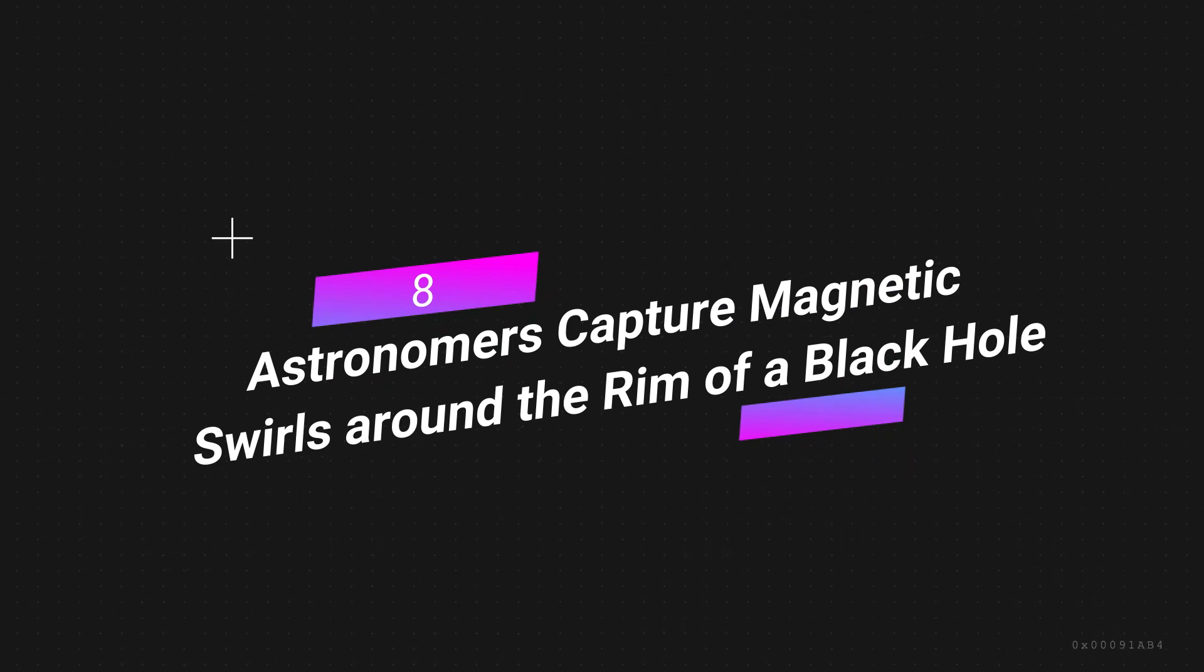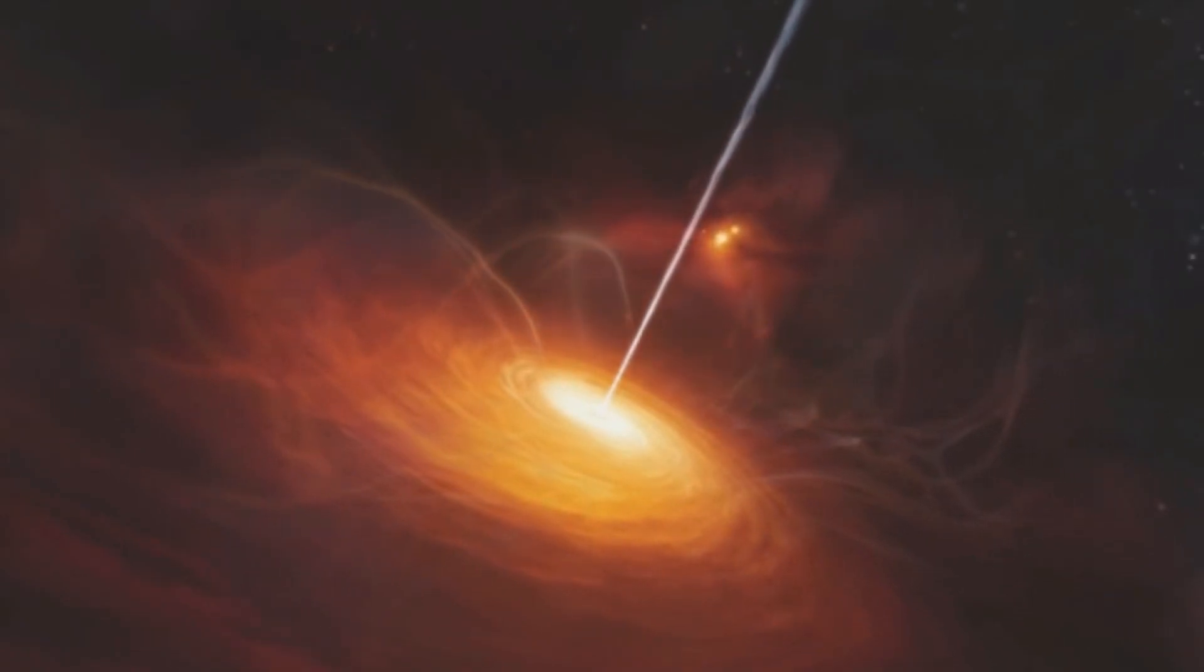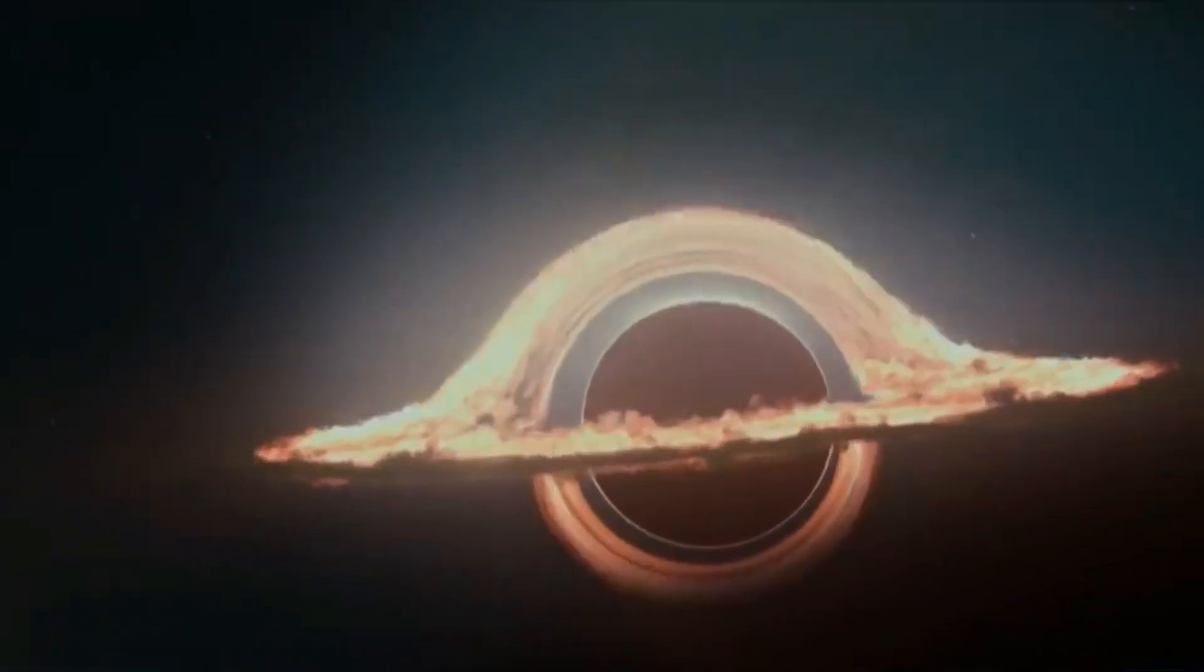Number 8: Astronomers Capture Magnetic Swirls Around the Rim of a Black Hole. In 2019, astronomers made history when they showed the world the first shot of a black hole's edge.